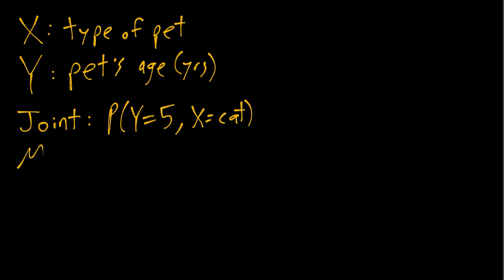A marginal probability would be a probability that only involves one of the two variables and not both. For example, what is the probability of a pet being a cat rather than a dog or another type of pet?